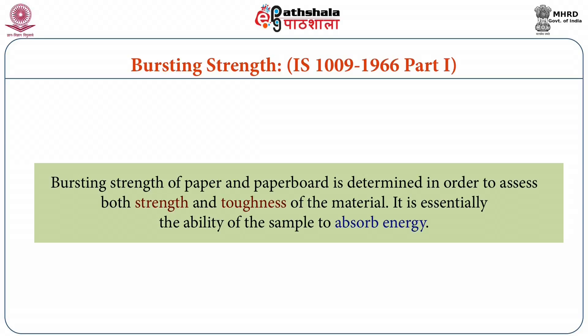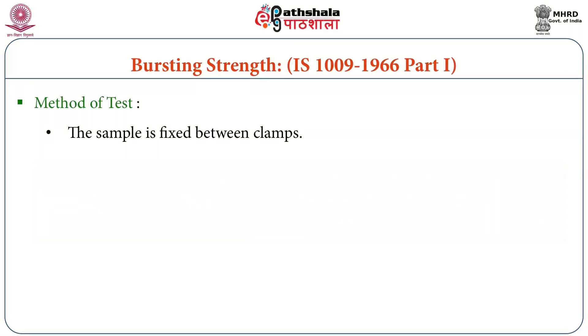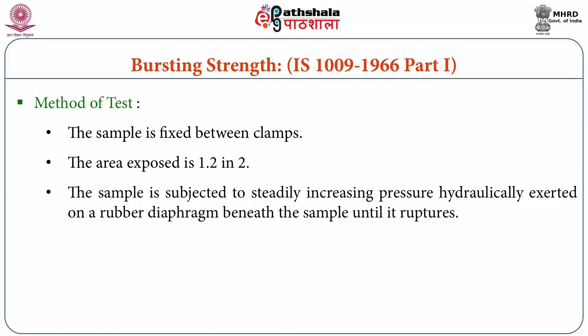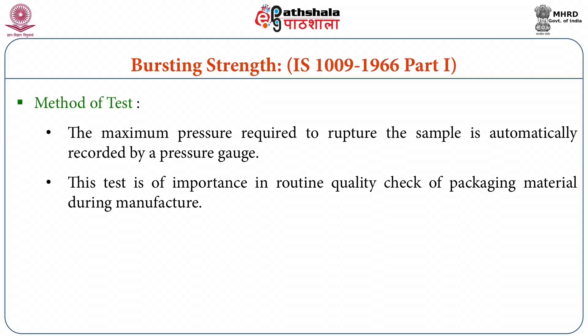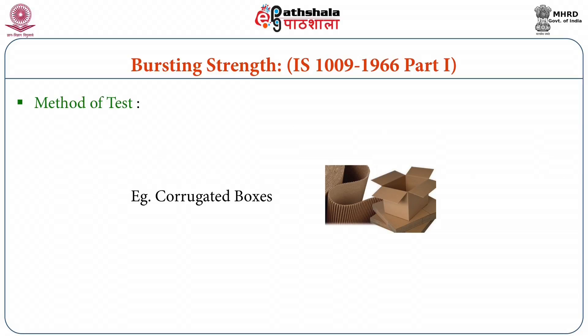Bursting strength of paper and paperboard is determined in order to assess both strength and toughness of the material. It is essentially the ability of the sample to absorb energy. In this test, the sample is fixed between two clamps; the area exposed is 1.2 square inch. The sample is subjected to steadily increasing pressure hydraulically exerted on a rubber diaphragm beneath the sample until it ruptures. The maximum pressure required to rupture the sample is automatically recorded by a pressure gauge. This test is important because it gives packaging material the property required during transportation, and it also helps in deciding the strength of corrugated boxes.